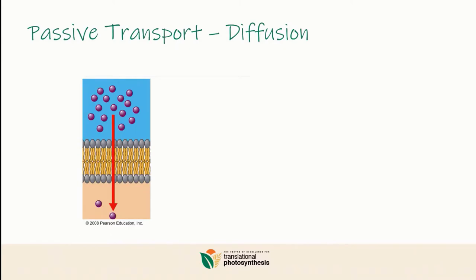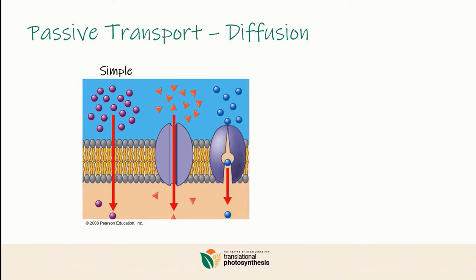Small non-polar molecules like oxygen, carbon dioxide, or other gases can literally slip between the phospholipids, and that's called simple diffusion. Molecules that are slightly bigger or charged ions need the help of a channel or carrier protein, and we refer to that as facilitated diffusion.